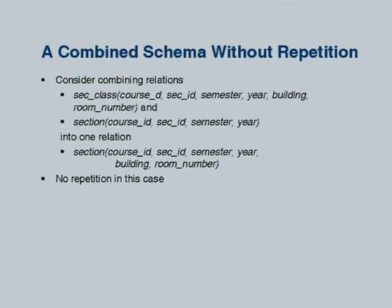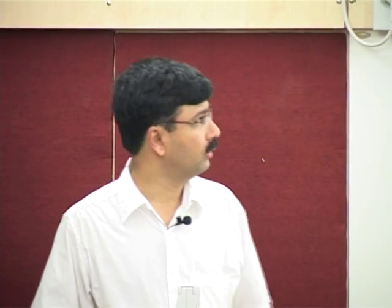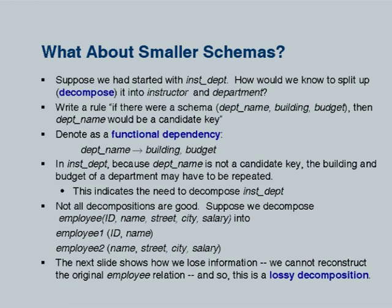Why are we sure there would not be repetition in the second case? In this case it is actually a special case where merging means no extra information is added. In general, we start with a design from ER or direct design, and need to figure out whether that design has redundancy. There is another requirement not covered by functional dependency theory: whether the design can represent all information needed.